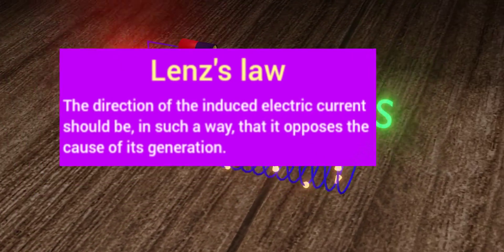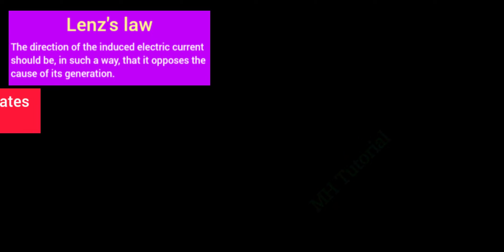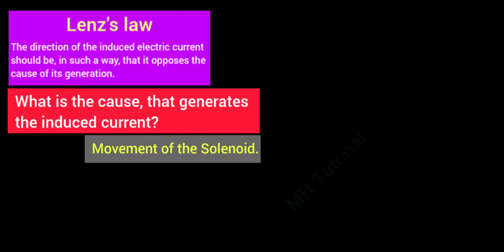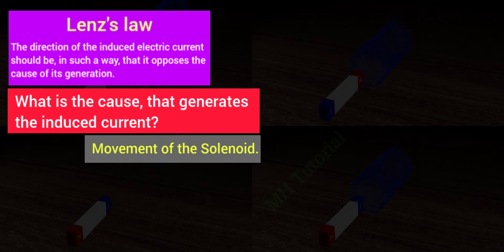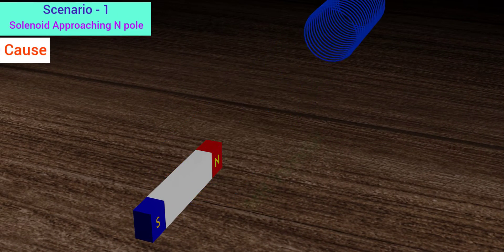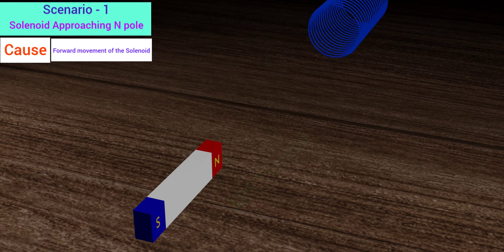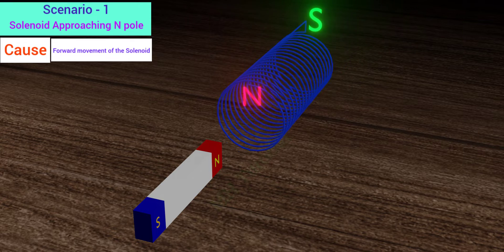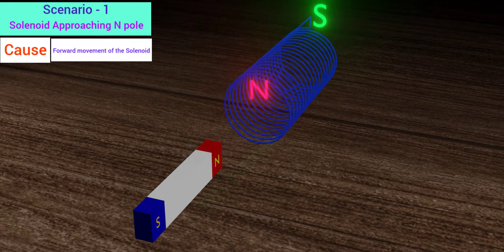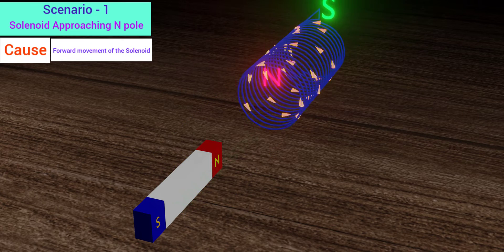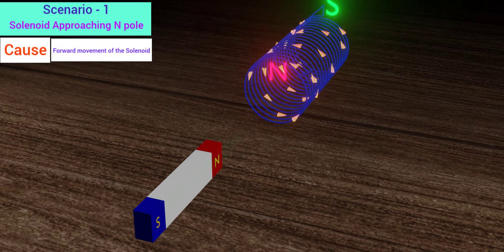Now we have learnt the pole positions. Review the statement of the law again. A question arises: what is the cause that generates the induced current? The answer is the movement of the solenoid. So the induced current should oppose the movement of the solenoid. In the first situation, the solenoid is approaching the north pole — that is the cause of the induction. The law says the induced current will resist its movement towards the magnet. It will produce a north pole near the permanent magnet so that the magnetic north pole can repel the north pole of the solenoid. To produce a north pole, it needs to generate a current in the anti-clockwise direction. Hence, the direction of the current is anti-clockwise.